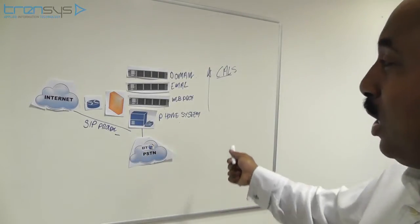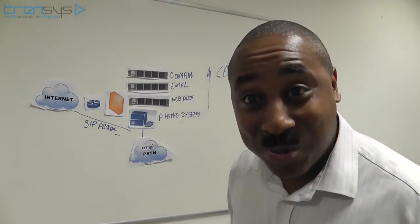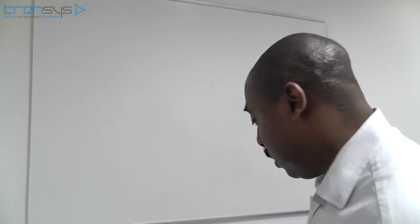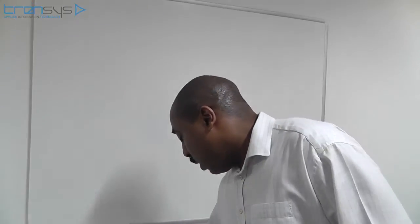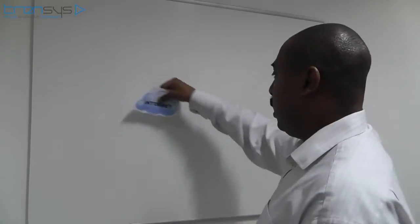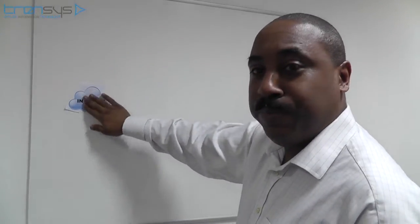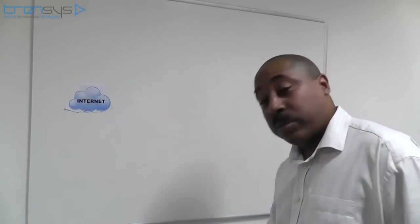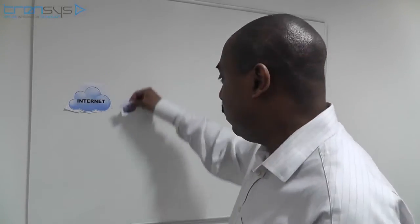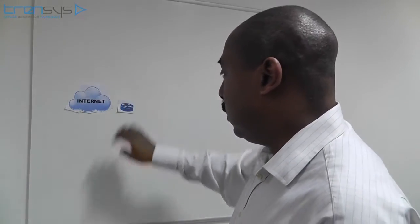I'm about to show you how IP Brick does all this differently. So let's start again — we're going to deploy our new branch office. Again we start with our internet connection, here it is. We still need our router, typically ADSL, leased line, and so forth. Here's our router.